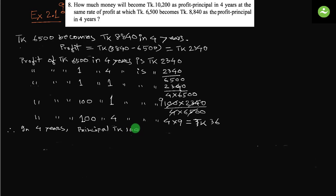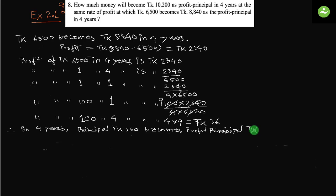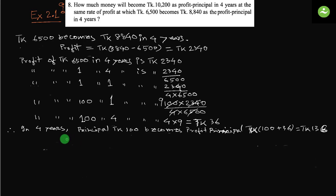We can say: principal taka 100 becomes profit principal taka 136. In other words, if the profit principal is taka 136, then the principal is taka 100.